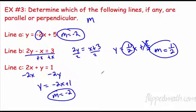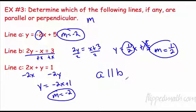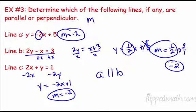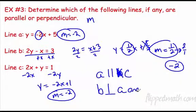Whenever the slopes are the same, they're parallel. Lines (a) and (c) both have slope negative 2, so a is parallel to c — written with the parallel symbol. Now, the reciprocal of 1 half is 2, and the negative reciprocal would be negative 2. Both (a) and (c) have slope negative 2, which is the negative reciprocal of 1 half. So (b) is perpendicular to both (a) and (c) — written with the perpendicular symbol.